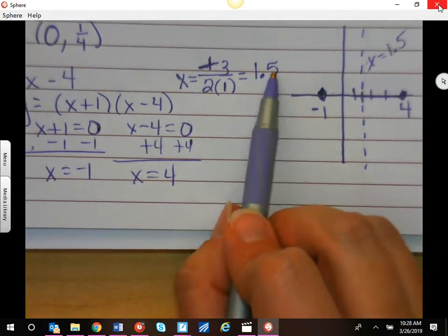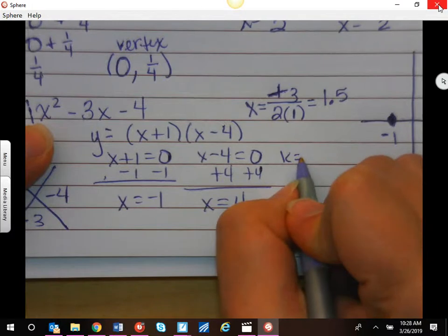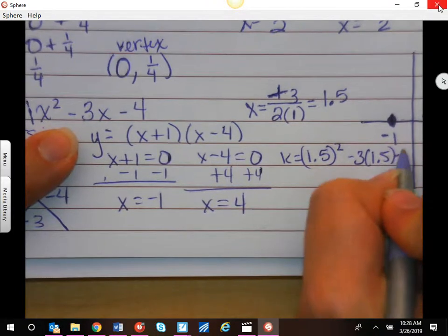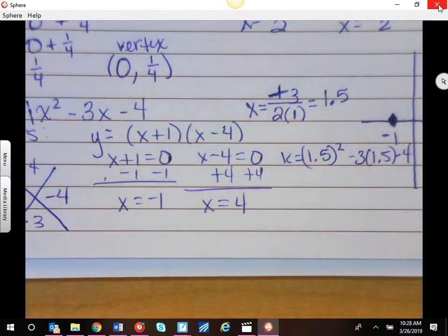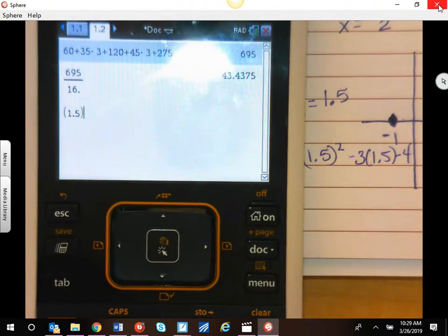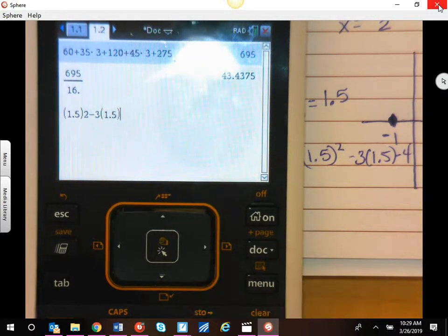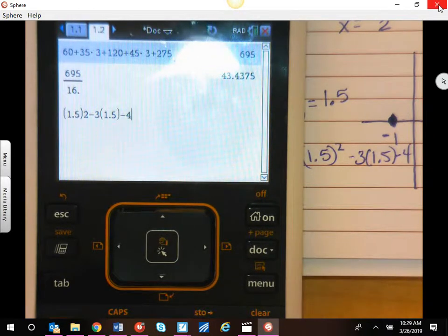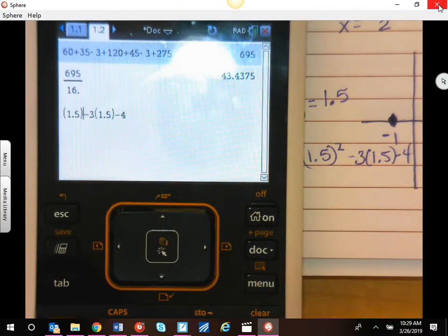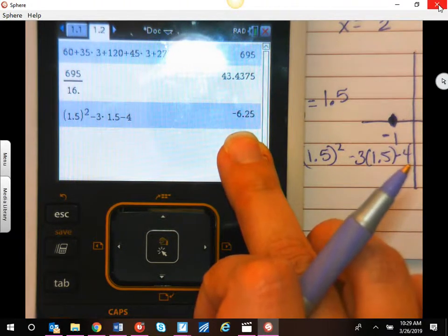I'm going to plug this in to my original equation over here. So my K is going to be 1.5 squared minus 3 times 1.5 minus 4. Now, I'm going to be a little bit lazy here. I'm going to go ahead and use my calculator for that. Remember to put your number in parentheses when you square it. Minus 3 times 1.5. I did not square it. You're right. Thank you. Let me go back. Good catch. Squared. There we go. Now it looks the same. 6.25. That is going to be my Y value on my vertex.